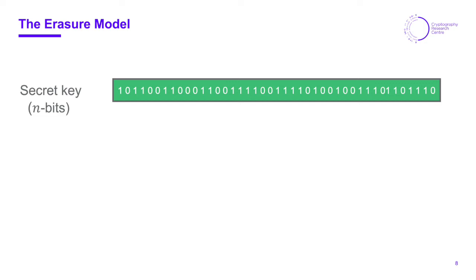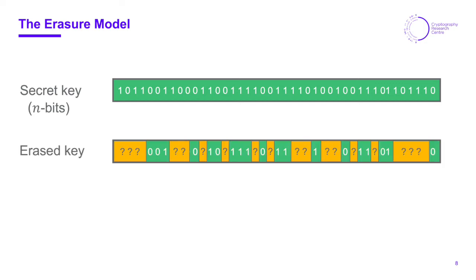In the erasure model you obtain an erased version of this key. Some of the bits got erased, here illustrated by the covered areas with question marks, and the value of those bits is not known. However the green parts are known and the positions also, and it's guaranteed that those are correct.